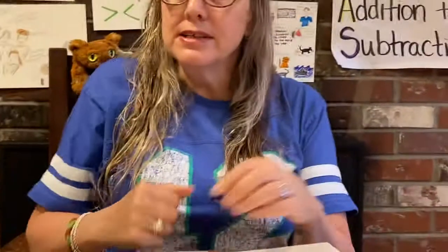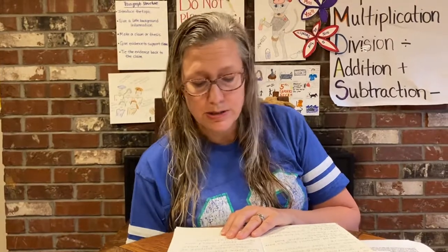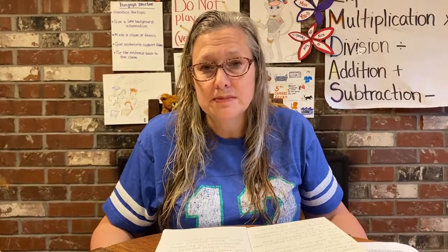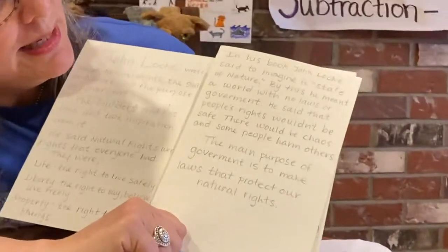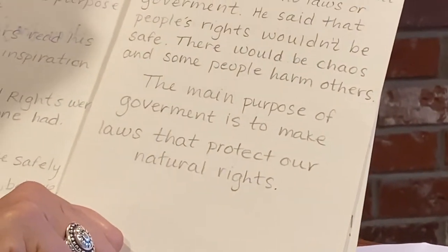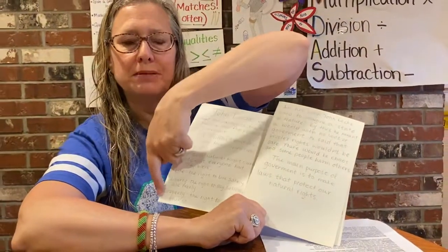Finally, the last thing we're going to put in this section is the main purpose of government. According to John Locke — and the founding fathers believed it too — the main purpose of government is to make laws that protect our natural rights. That's the main idea about John Locke. So I wrote: 'The main purpose of government is to make laws that protect our natural rights' — laws that make sure we can have life, liberty, and property.